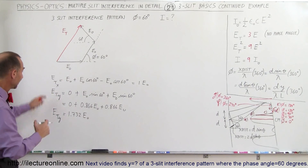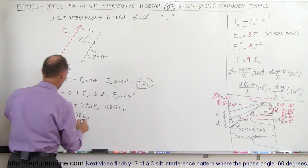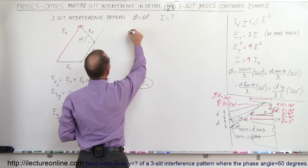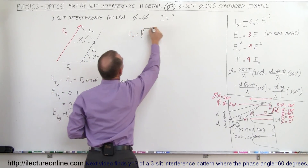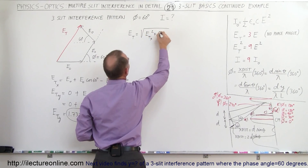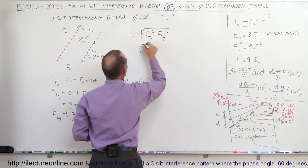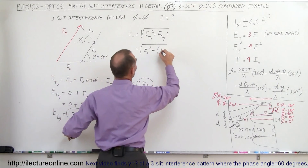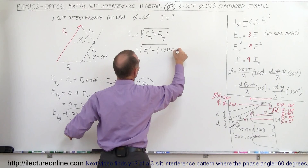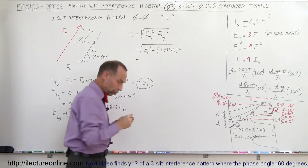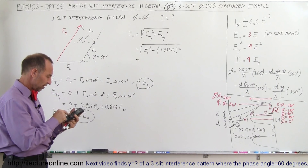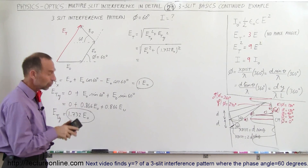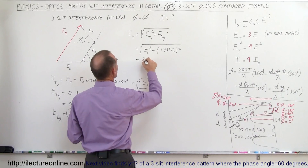Now we have the x and y components: x is E sub-naught and y is 1.732 E sub-naught. To find the total length of E total, we take the square root of the x component squared plus the y component squared, equal to the square root of E sub-naught squared plus (1.732 E sub-naught) squared. That gives the square root of 1 plus 3, which equals 2 E sub-naught.